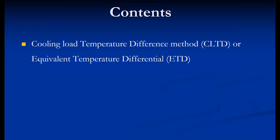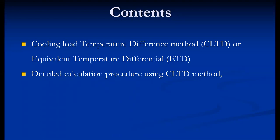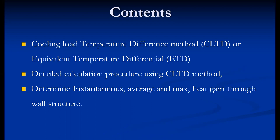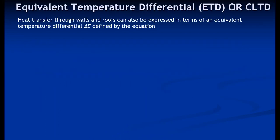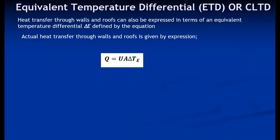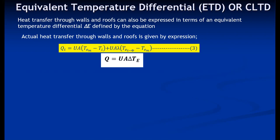We will mainly discuss the CLTD, or Cooling Load Temperature Differential method. The detail calculation procedure, the conditions used for calculating delta T, heat transfer to walls and roofs can be expressed in terms of an equivalent temperature differential delta T, defined by the equation q equals UA·delta T. The actual heat transfer to walls and roofs is given by the expression discussed in the previous method using decrement factor and time lag.